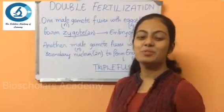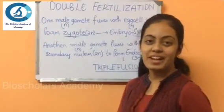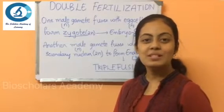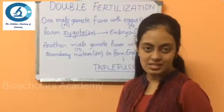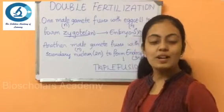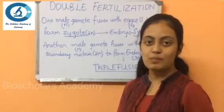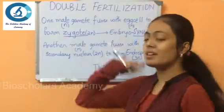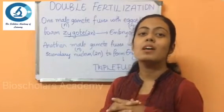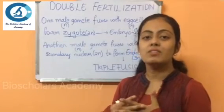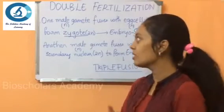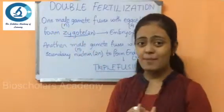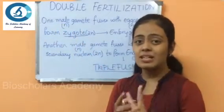Hello everyone, welcome to Bio Scholars Academy of Learning. In today's video we are going to discuss double fertilization. Fertilization is a process of fusion of male and female gametes. Double fertilization is an exclusive method which occurs in angiosperms. There will be two male gametes that will be released by the pollen tube.